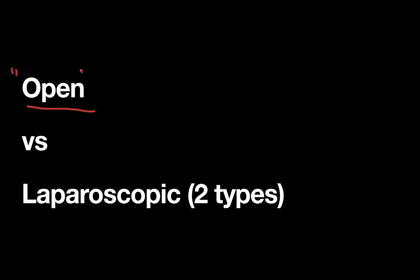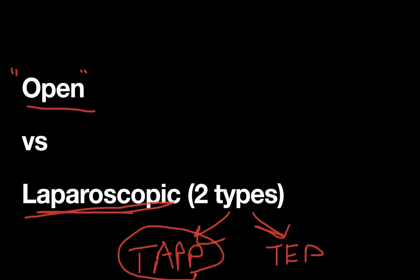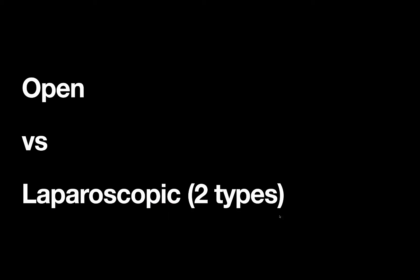Now let's talk about the different types of repair. First, there's the quasi-open repair, where you make a larger skin incision and work down to the hernia. Then there are the minimally invasive or laparoscopic repairs, of which there are two types: the TAPP (trans-abdominal pre-peritoneal) and the TEP (totally extra-peritoneal). We'll get into both of those shortly.